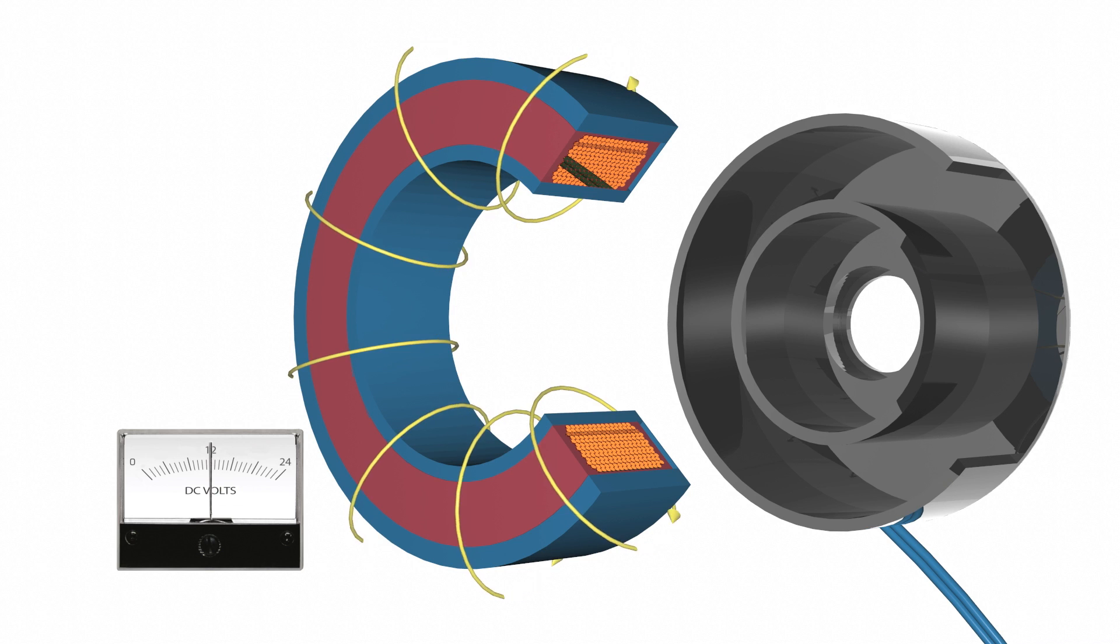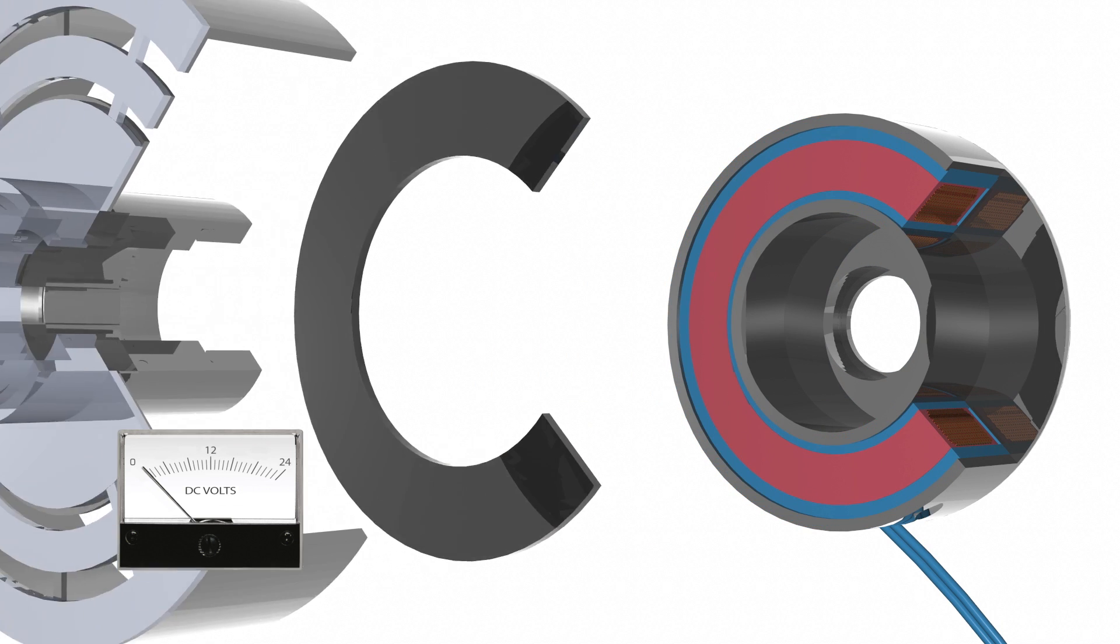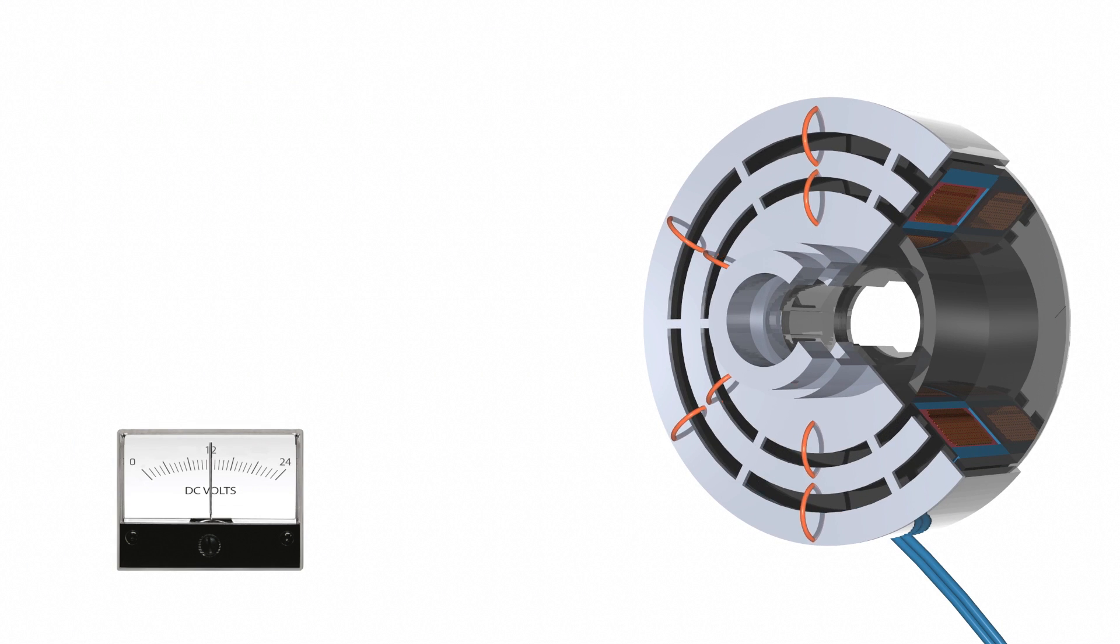When voltage or current is applied to the clutch, the coil becomes an electromagnet and produces magnetic lines of flux. This flux is then transmitted between the small air gap between the field and the rotor. The rotor then becomes magnetized and sets up a magnetic attraction loop between the rotor and the armature.